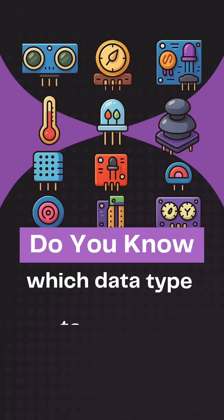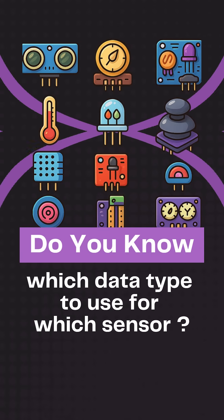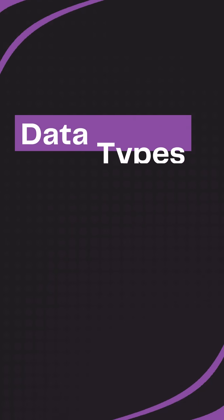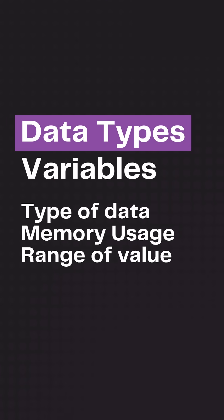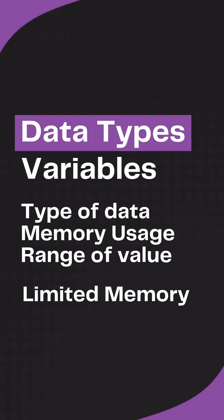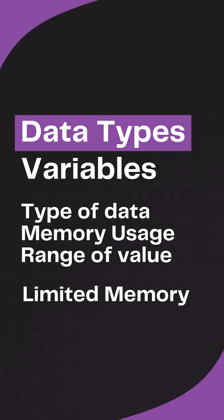Do you know which data type to use for which sensor? Let's figure that out. Data types are variables that define what kind of data a variable can store, how much memory it uses, and what range of values it supports.